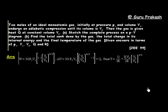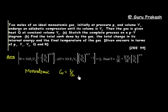This problem gives us 2 mol of an ideal monatomic gas. Since the gas is monatomic, I know Cv = 3/2 R, and I will plug this value whenever needed. Since it is an ideal gas, I can apply PV = nRT.